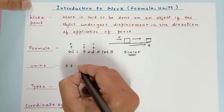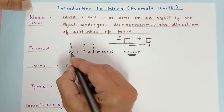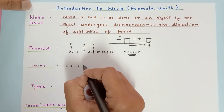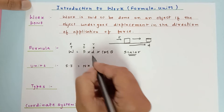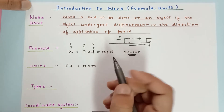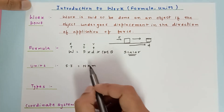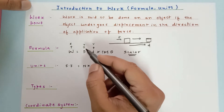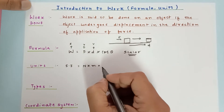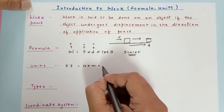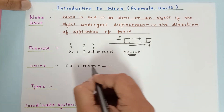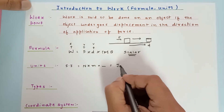If you want to find out the SI unit of work done, use the formula: instead of force use Newton, instead of displacement use meter. cosθ is just a ratio, so it is a unitless quantity. Newton into meter is called Joule — that is the SI unit of work done.